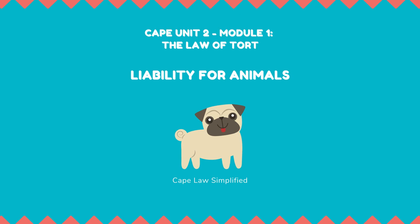It must be proved that a duty of care was owed by the defendant to the claimant because: A) there was a special risk of injury to others, and B) the defendant was aware of the possibility of the particular kind of injury occurring. For example, if a horse bit a human, it would not be sufficient to show that the horse was high-spirited and therefore likely to knock people down — harm from a bite is a totally different kind of harm from accidental collision. It would be necessary to show that the defendant's horse had previously tried to bite someone and that the defendant knew of the previous incident.